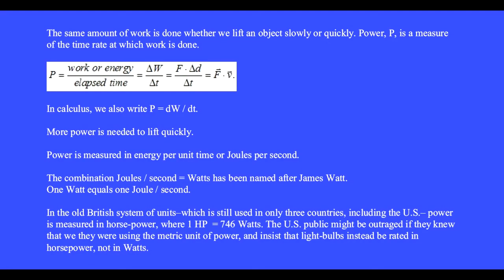The same amount of work is done whether we lift an object slowly or quickly. Power, which is indicated with the symbol P, is the measure of the time rate at which work is done. Power equals work or energy divided by elapsed time, equals delta W over delta T.